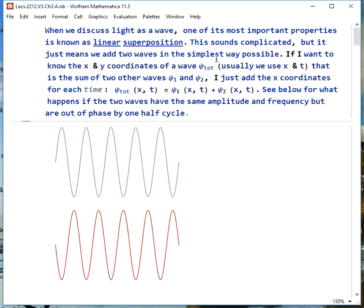When we talk about light as a wave, one of the most important properties it has is what's called linear superposition. And all that really means is we add two waves the simplest way possible. If I want to know the x and y coordinates of a product wave that's the sum of two other waves, I just add those x and y coordinates, although usually we're talking about x and t.